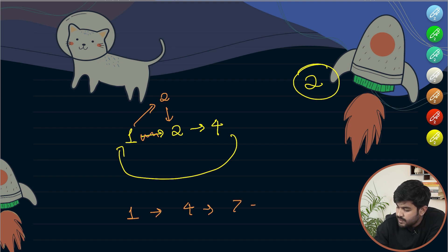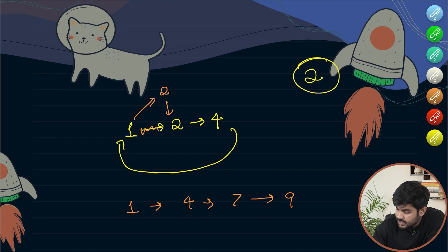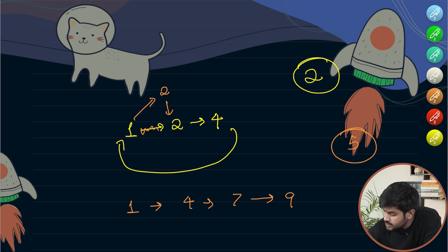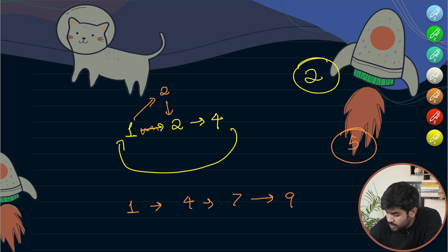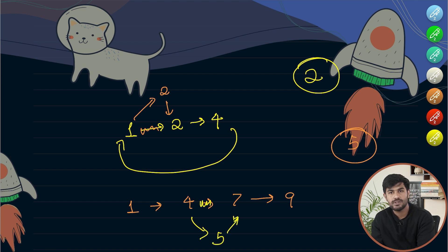Let's do the second sample test case: 1, 4, 7, and 9, and the data to be inserted is 5. The link between 4 and 7 needs to be cut, 4 needs to point to 5, and 5 needs to point to 7. This is what is expected.